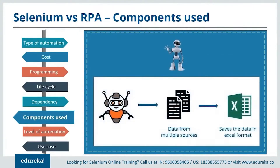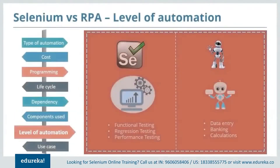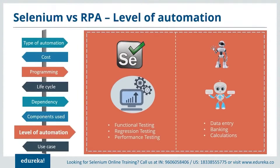Whereas RPA makes use of robots to complete a task. Consider the situation where you need to enter data from different sources under a tight time constraint — the smart answer is to automate it. RPA bots help in automating data from different sources and saving it in the form of an Excel file where you can find the data in a sequence. Selenium does not automate any clerical processes — it automates functional, regression, and performance testing. Whereas RPA automates all clerical processes like data entry, calculations, and so on.